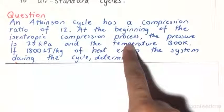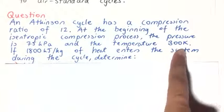An Atkinson cycle has a compression ratio of 12. At the beginning of the isentropic compression process, the pressure is 75 kPa and the temperature is 300K. If 1800 kJ per kg of heat enters the system during the cycle,